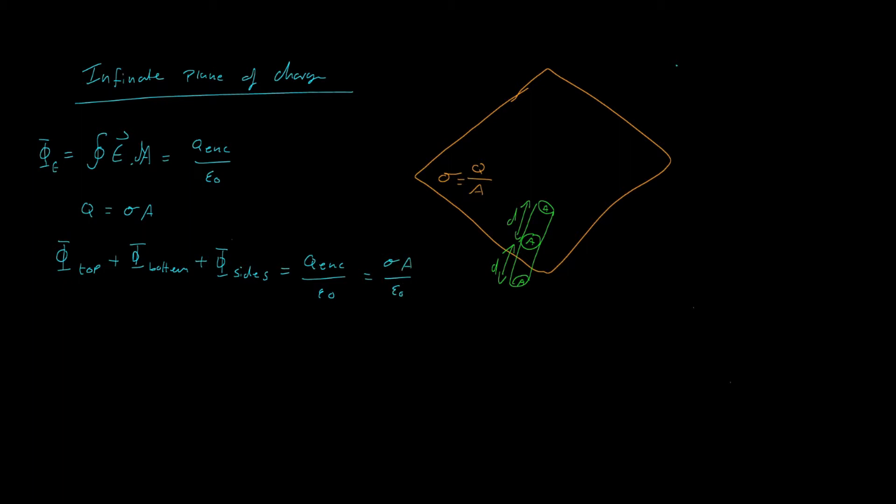In this case, with a plane, an infinite plane, the charge through the side is going to equal 0. So we're left with the flux through the top plus the flux through the bottom equals sigma times area over epsilon 0.